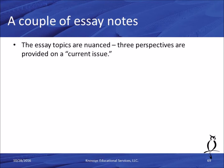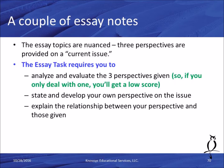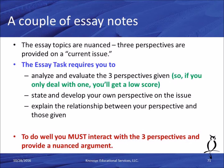A zero in any section means zero in all sections — that means the essay was either off-topic or illegible. Otherwise you'll get a score of one to six from each grader. Let's look at the essay. The topics are nuanced — you're given three perspectives on some current issue and must address all of them. The ACT task says you need to analyze and evaluate all three perspectives. If you only deal with one or two, you'll get a low score. You also have to state and develop your own perspective, and explain the relationship between your perspective and the three given.